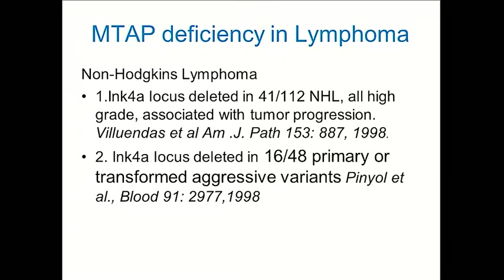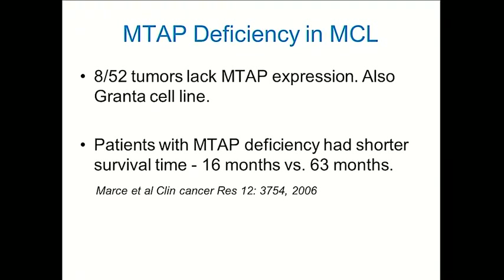In non-Hodgkin's lymphoma, the CDKN2A locus is deleted in a high percentage of patients, and presumably MTAP is co-deleted in many of these patients, especially in the transformed aggressive variants. In mantle cell lymphoma, a study looked at MTAP expression and found that although a small percentage of patients had deletion of MTAP, survival was markedly decreased compared to patients whose tumors had MTAP expression.